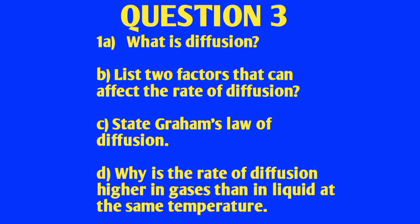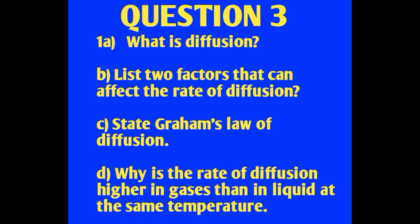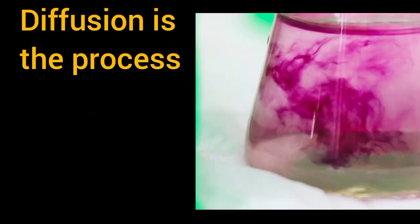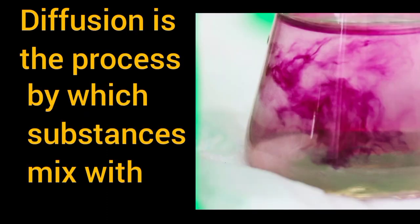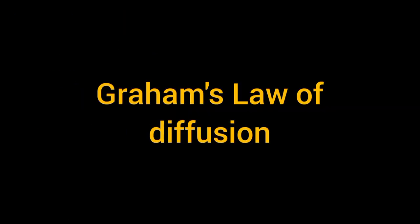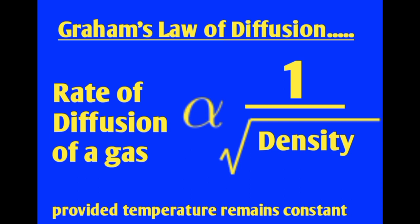Question three: What is diffusion? List two factors that can affect the rate of diffusion. State Graham's law of diffusion. Diffusion is the process by which substances mix with one another as a result of the constant random motion of their molecules. Graham's law of diffusion states that the rate of diffusion of a gas is inversely proportional to the square root of its density, provided temperature remains constant.